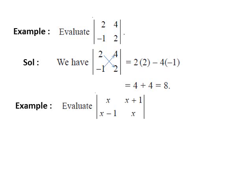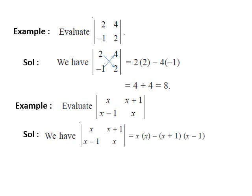Take one more example. We have to find the determinant of a matrix of order 2×2 whose elements are x, x+1, x−1, x. Again, we take the product of diagonal elements minus the product of non-diagonal elements. The diagonal elements are x and x; the non-diagonal elements are x+1 and x−1. So, the determinant equals x·x minus (x+1)(x−1), which simplifies to x² minus (x²−1), which equals 1.